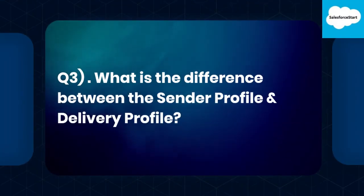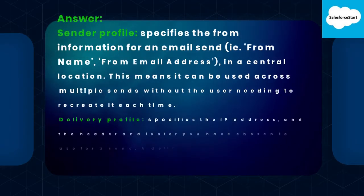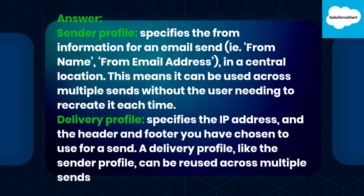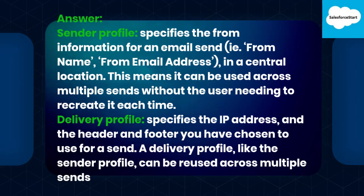Q3: What is the difference between the Sender Profile and Delivery Profile? Sender Profile specifies the from information for an email send — e.g., from name and from email address — in a central location. This means it can be used across multiple sends without the user needing to recreate it each time. Delivery Profile specifies the IP address and the header and footer you have chosen to use for a send. A Delivery Profile, like the Sender Profile, can be reused across multiple sends.